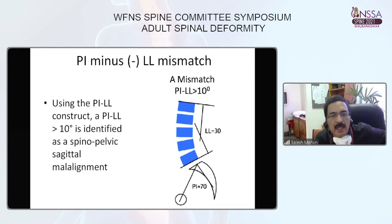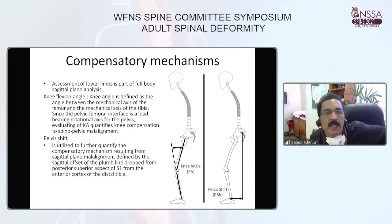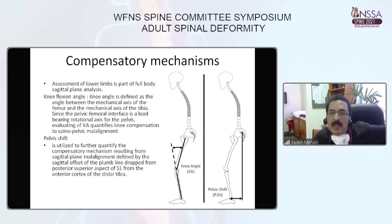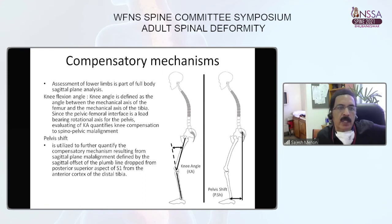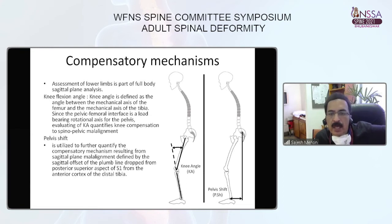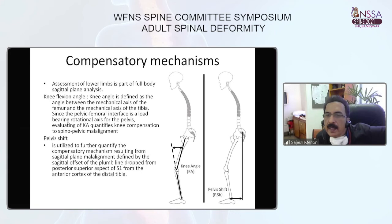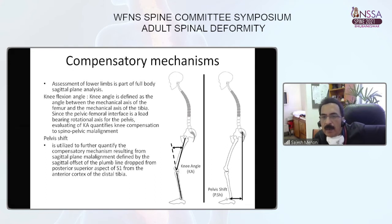PI-LL mismatch should be corrected when considering surgical correction. One should also remember that compensatory mechanisms can mask malalignment of the pelvis and spine. Assessment of compensatory mechanisms is therefore very important. The two most commonly assessed methods are the knee flexion angle — the angle subtended by a vertical line along the femur and the tibia — and pelvic tilt based on the vertical line from the posterior-most part of the superior sacral plate.